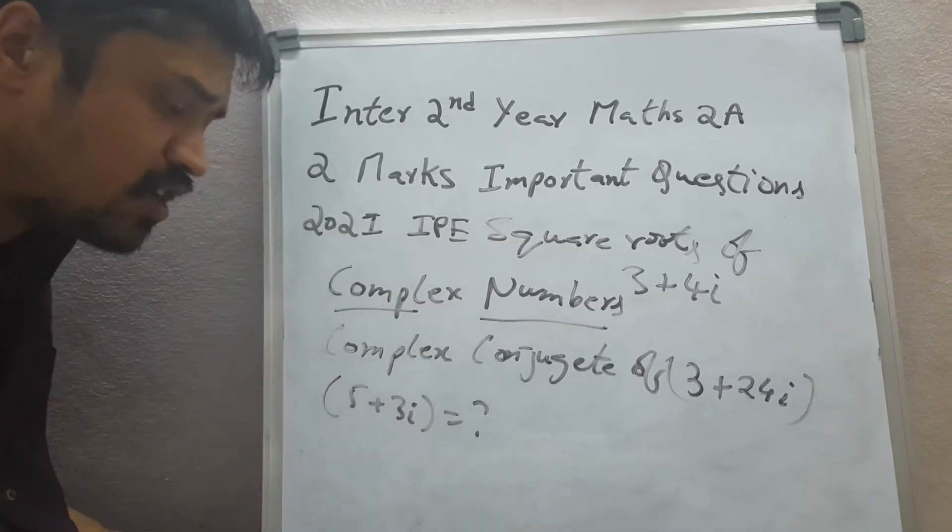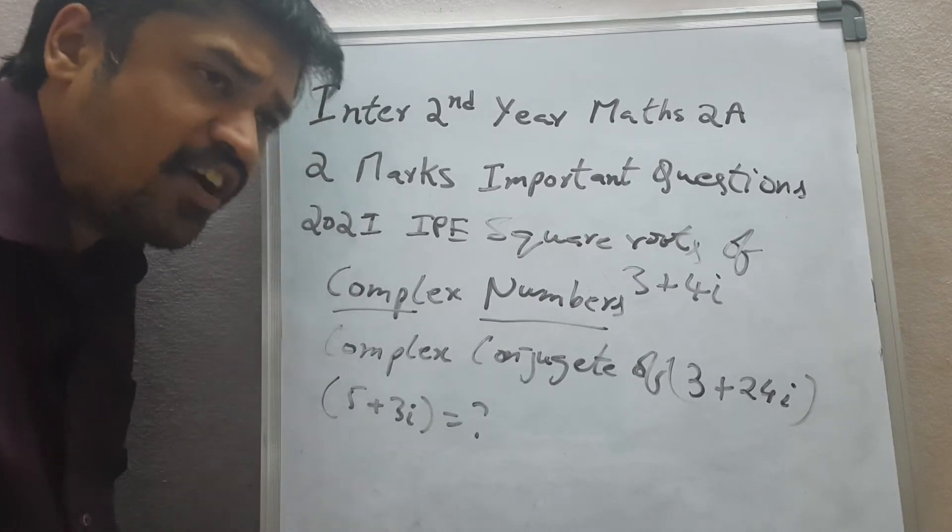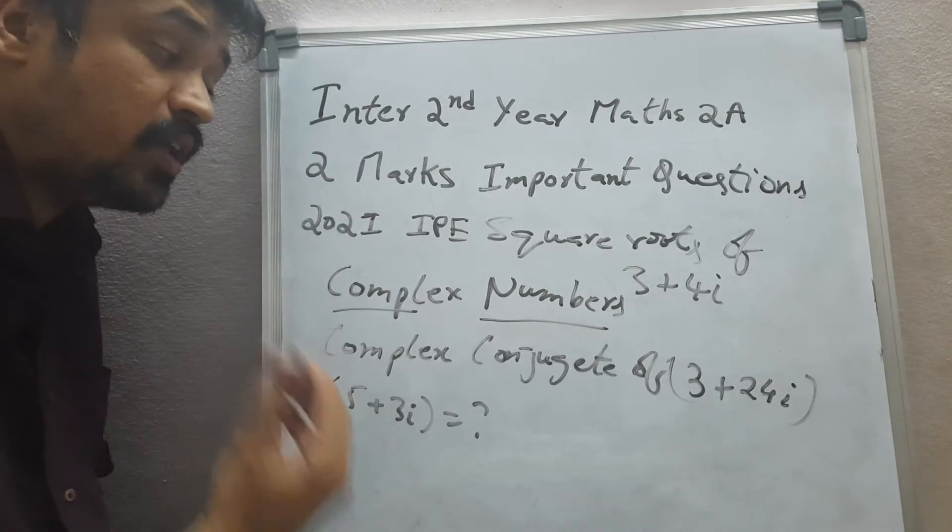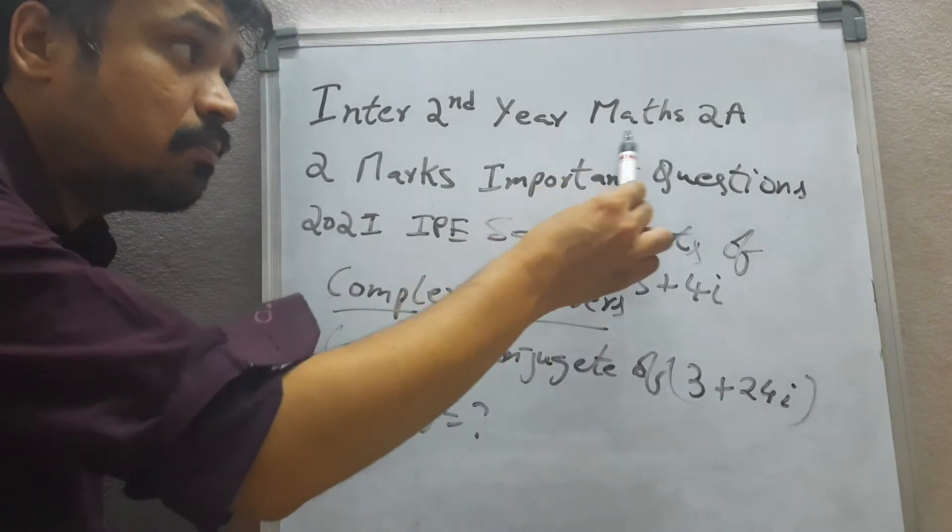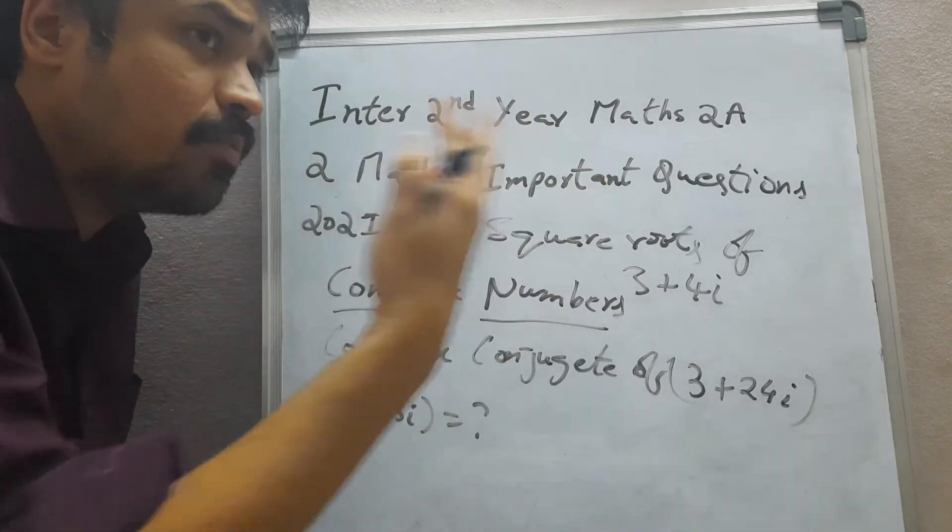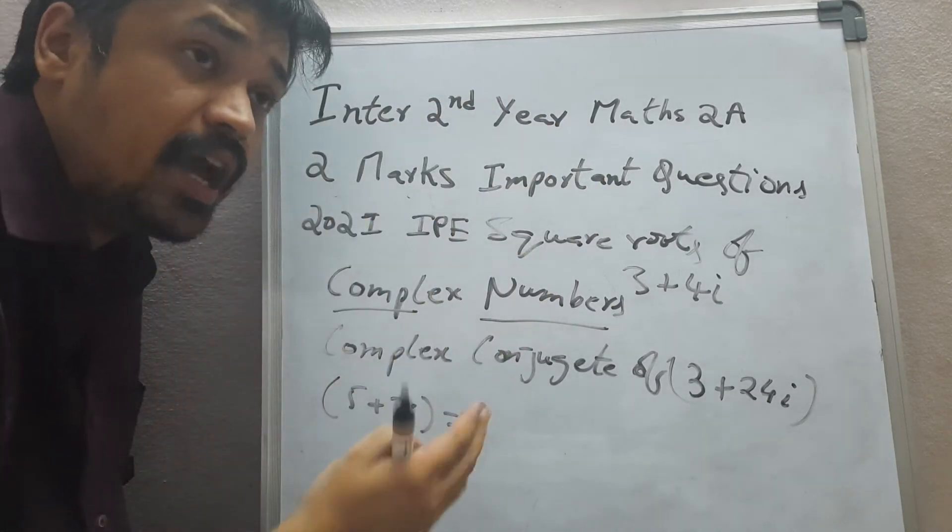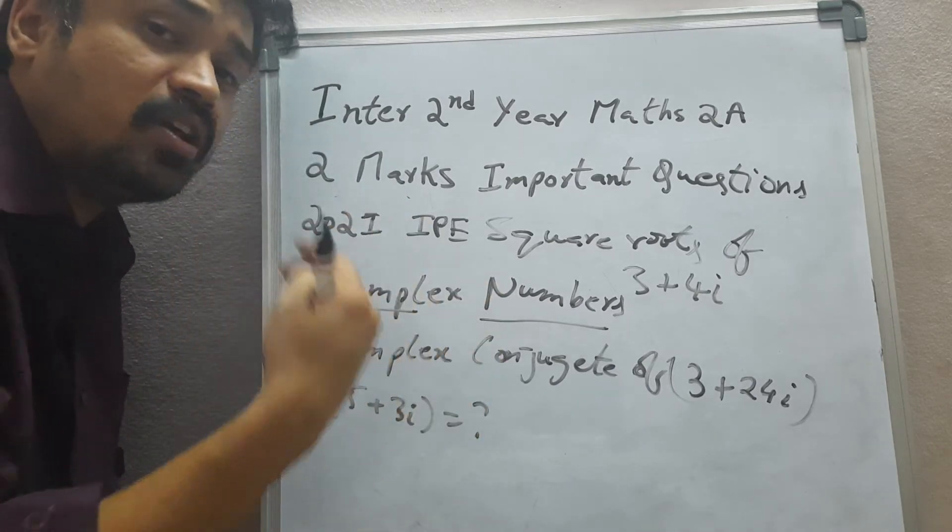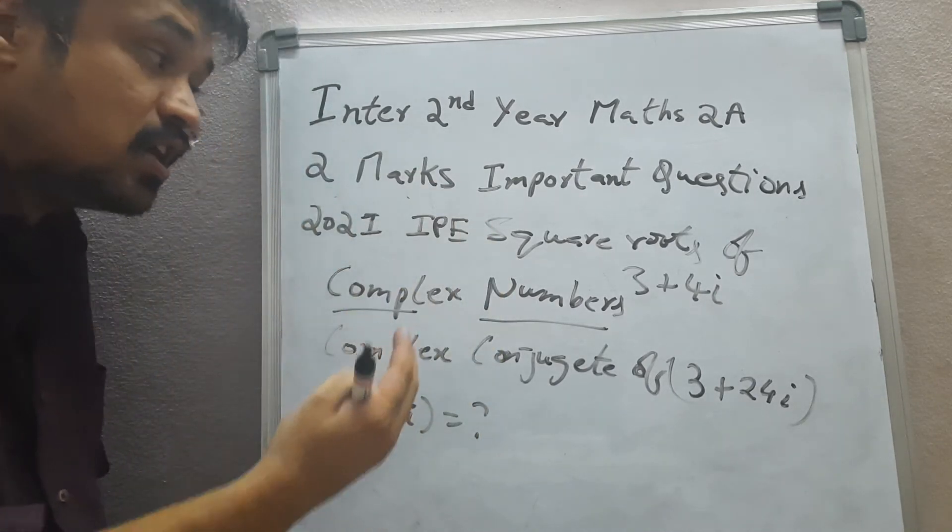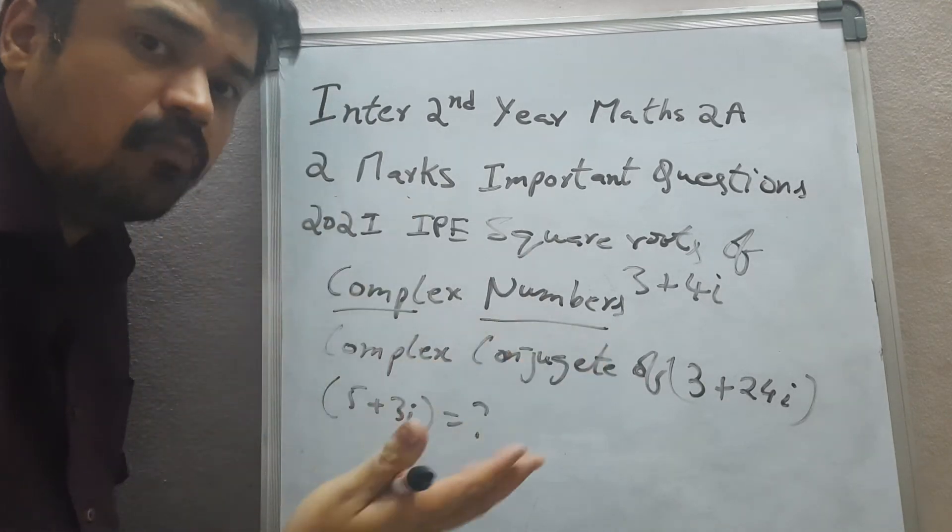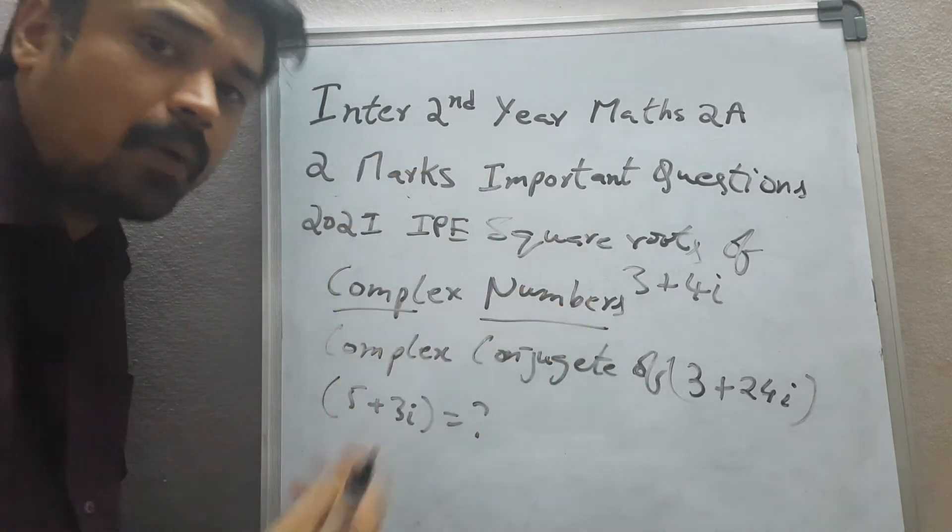I suggest each and every student to first of all refer the previous model exam papers. You can get it in the bookshop. The previous model exam papers regarding Maths 2A, 2 marks important questions. Just refer the previous model exam papers regarding 2 marks. You can easily understand what kind of questions, what kind of problems may come in the public exams.